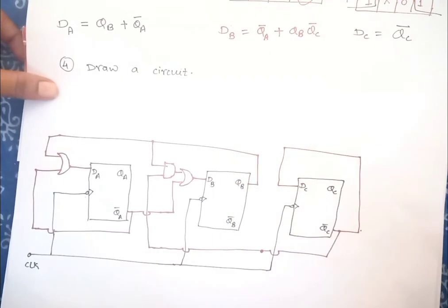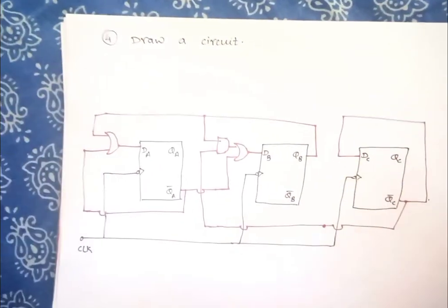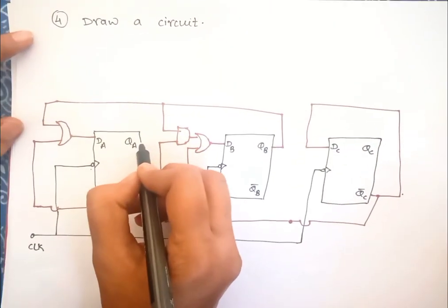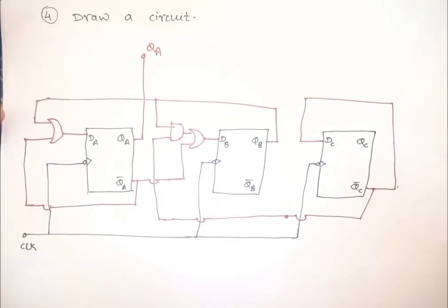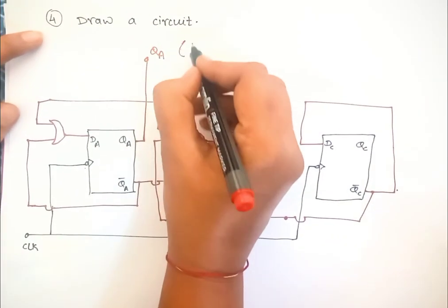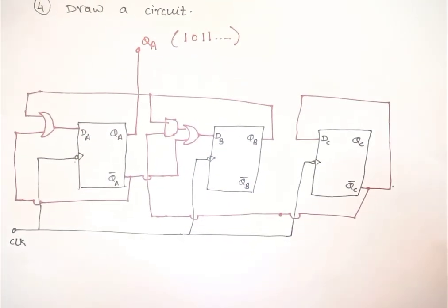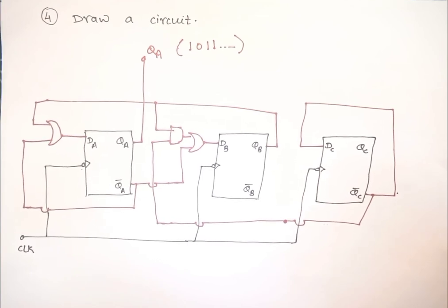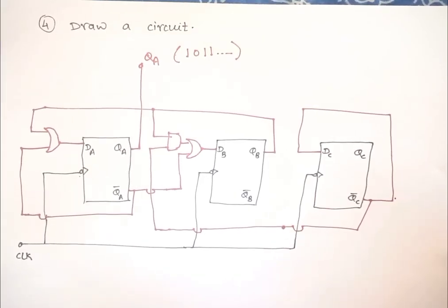This is the final design of the given sequence generator. The sequence output is obtained at QA, where we will get 1011 repeating continuously. This is all about how to design a sequence generator using D flip-flops, or we can say using a counter circuit. In the next lecture, we will study the design of a sequence generator using a shift register. Until then, bye and thanks a lot.